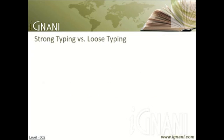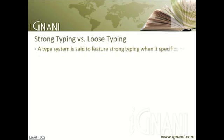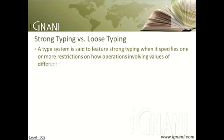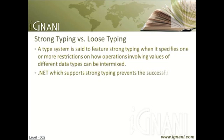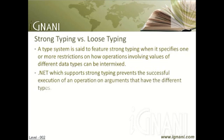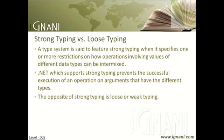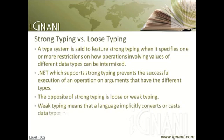Strong Typing vs. Loose Typing: A type system is said to feature strong typing when it specifies one or more restrictions on how operations involving values of different data types can be intermixed. .NET, which supports strong typing, prevents the successful execution of an operation on arguments that have different types. The opposite of strong typing is loose or weak typing, which means that a language implicitly converts or casts data types when used.